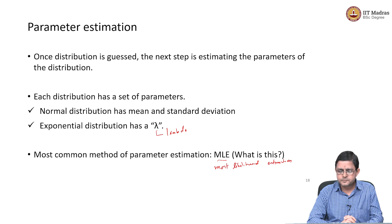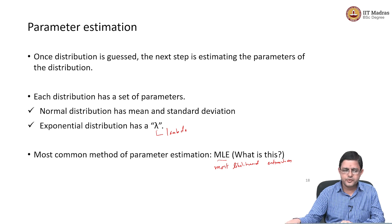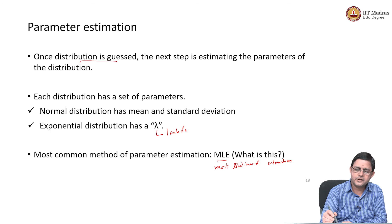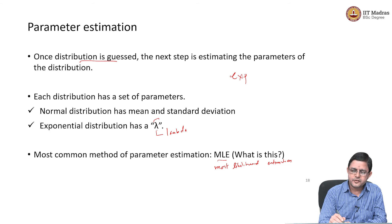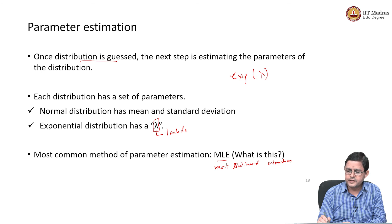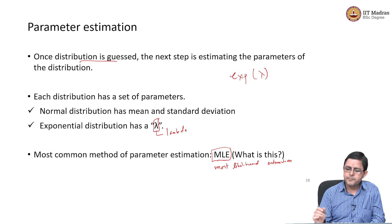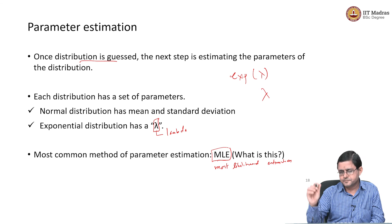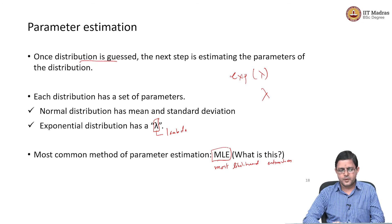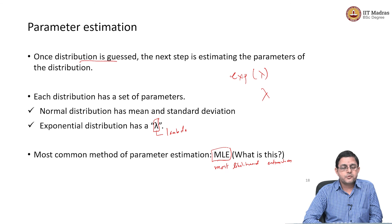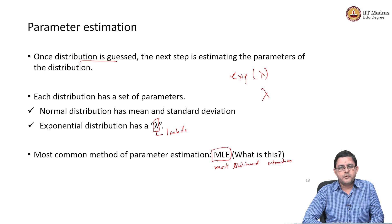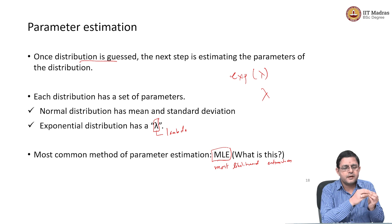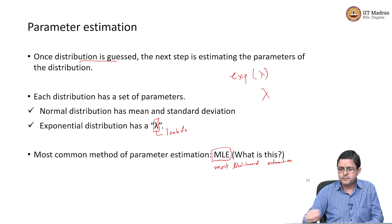Let us not go deeper into MLE. Let us say I have guessed a distribution — for my dataset, I am going to try out exponential distribution. Using maximum likelihood estimation, I have guessed the value of lambda. What is next? Obviously, guessing a distribution is not enough — we have to check how good the exponential distribution fits the data. How good is this fit? That is the next thing to be done.